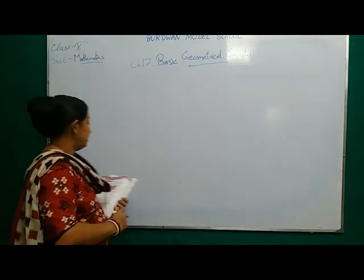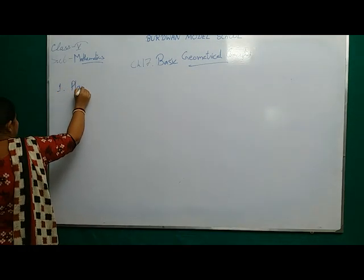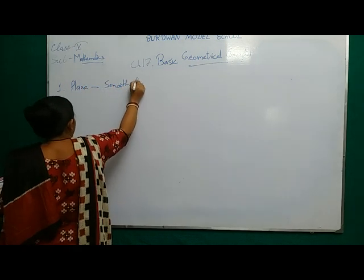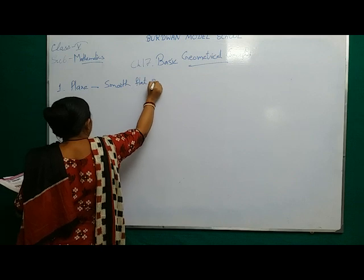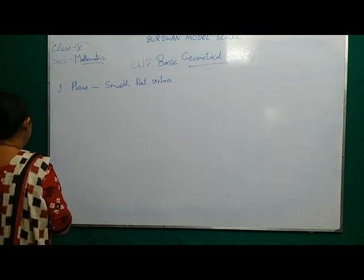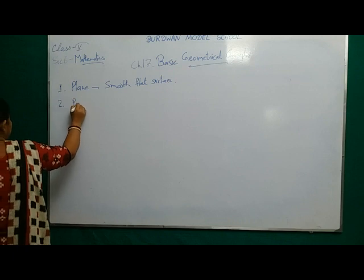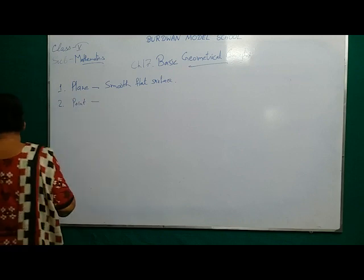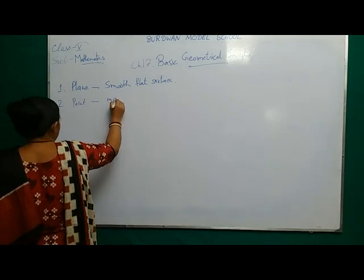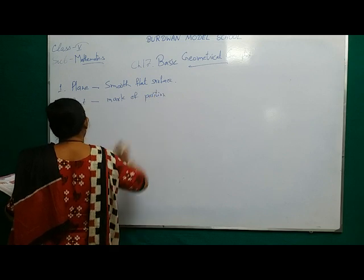Now I am writing. The first one is the plane. Plane is a smooth flat surface. A plane has no boundary also. Next comes the point. Point is just a mark of position — it is telling you in which position it is.